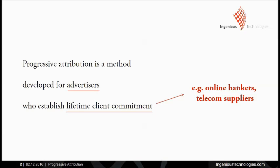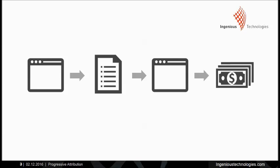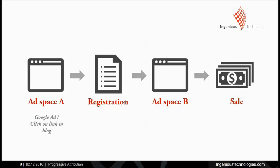Let's start by discussing the problem a bit deeper by looking at this picture here. What we have here is a touchpoint for adspace A, the registration, a touchpoint generated via adspace B, and finally a sale. This is a simplified example of a customer journey, but it is very realistic. One can imagine customers clicking on an ad in Google or a link on a consumer blog and deciding to create an account for the service of the advertiser.